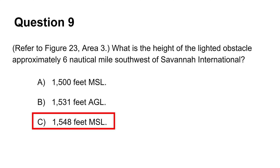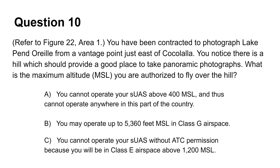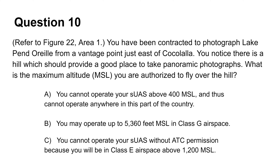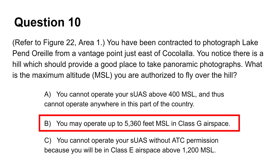The tenth question asks about the maximum altitude in feet MSL you are allowed to fly from the hills overlooking Lake Pent Oriel. Drones are permitted to fly 400 feet above ground level in uncontrolled airspace without prior authorization. On the sectional chart, a hill east of Kokolala is marked at 4906 feet MSL. Altitude markings for terrain are always in feet above MSL. This hill is located in Class G uncontrolled airspace from the surface up to 1200 feet AGL. Adding 400 feet AGL to 4906 feet MSL gives a maximum altitude of 5306 feet MSL — making B the answer.